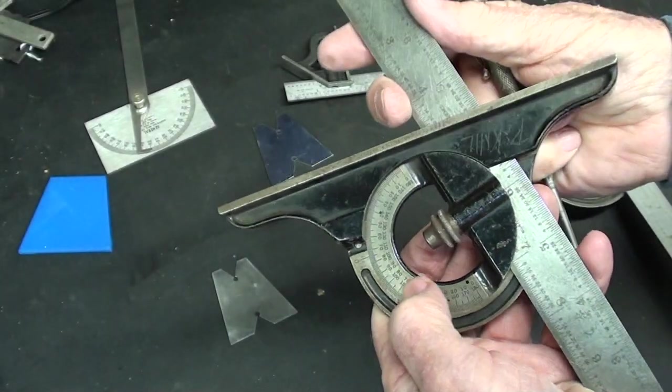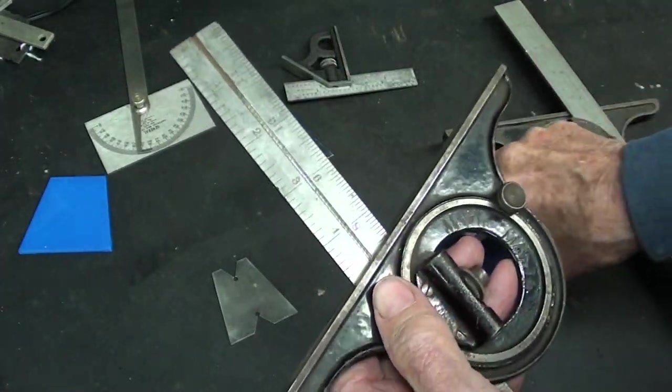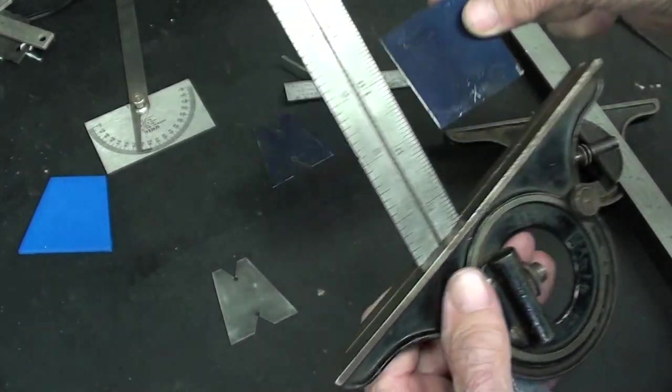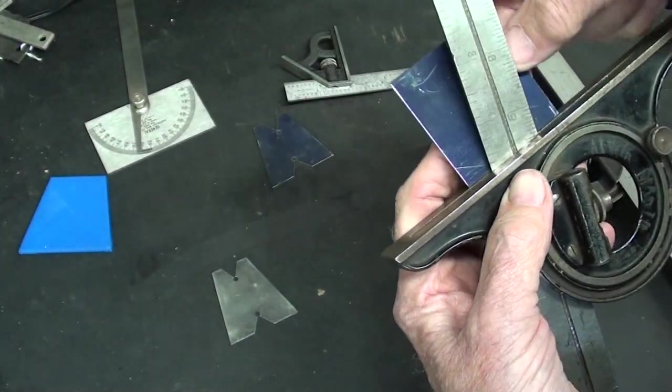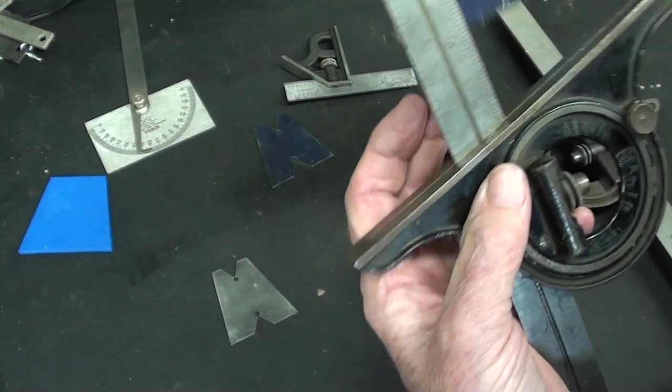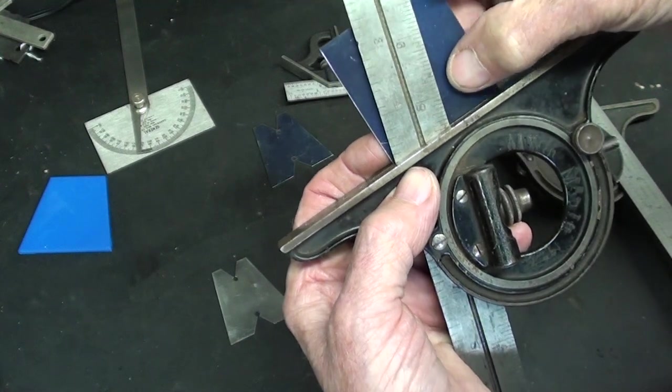Okay, this protractor is set for 15 degrees. It's a Starrett. You know, I should get paid by Starrett, but I've never received anything from them. But I've got to be one of their world spokesmen, don't you think? It's just I do not reach that many people.